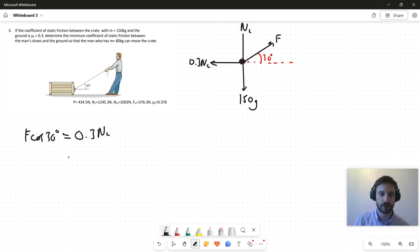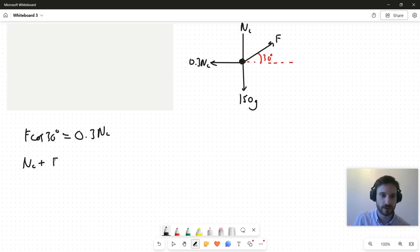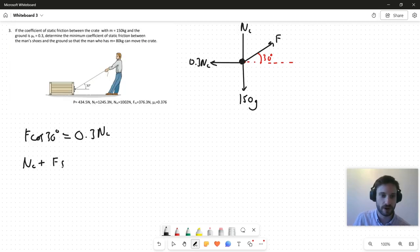Is this solvable? No. Okay, let's move on then. Let's resolve vertically. So things moving up, we have the normal force, we have the vertical component of that F force. Things moving down, we have that 150g force.